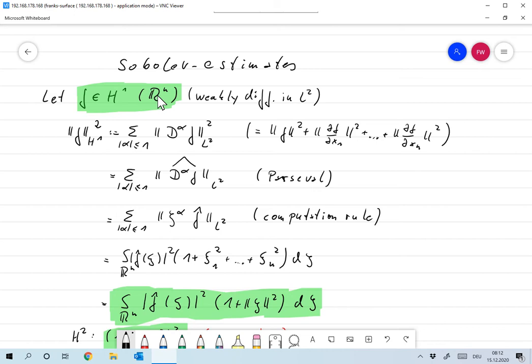To fix ideas let's look at H^1 of R^n, so that's the weakly differentiable functions where the functions and their derivatives are in L^2. And the usual definition of the norm there is that you define the H^1 norm squared as the sum of the norm of f and all its derivatives. In our short writing this is nothing but the sum over all multi-indices with the degree of alpha smaller or equal to 1, d to the alpha f in L^2.